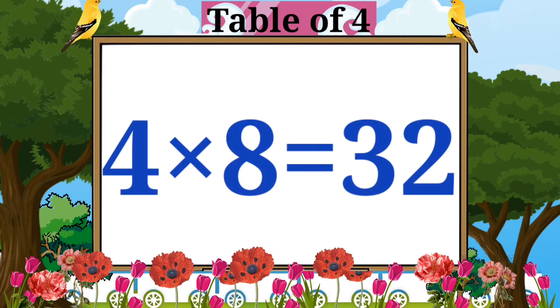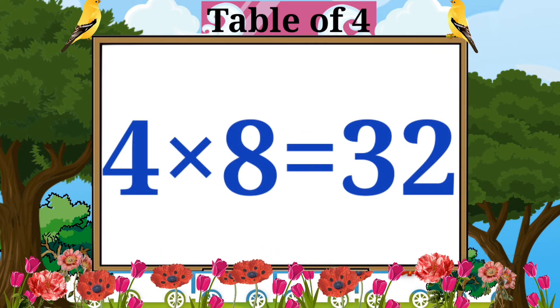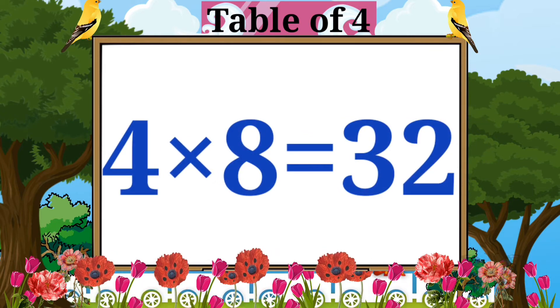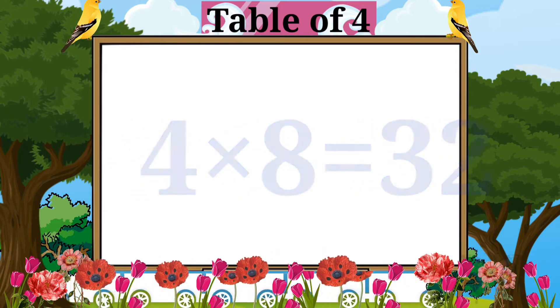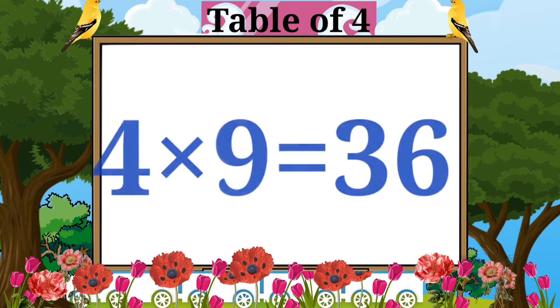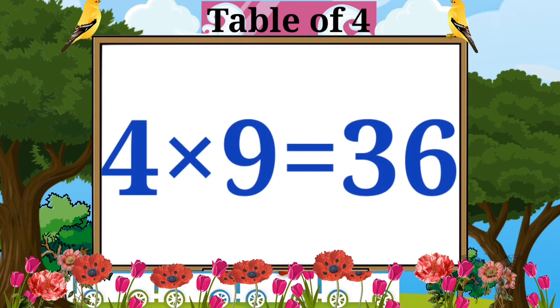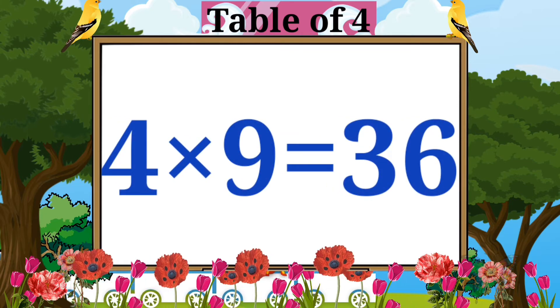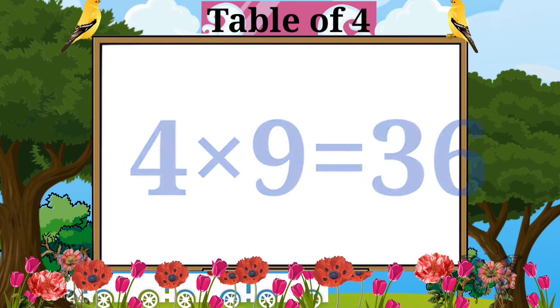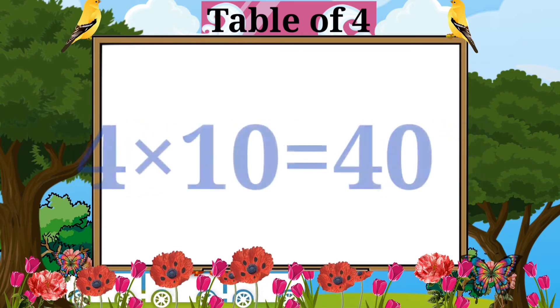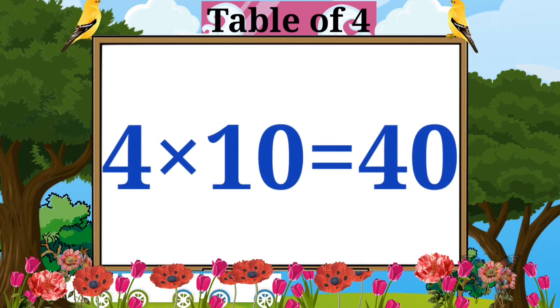Four eights are thirty-two. Four nines are thirty-six. Four tens are forty.